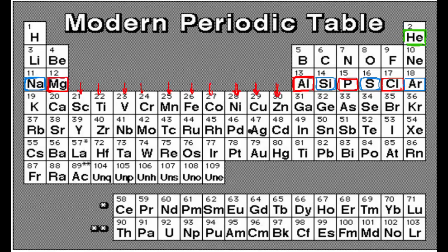This particular question belongs to chapter 5, that is periodic classification of elements. The core idea behind the periodic classification is to put the elements that have similar properties in the same group.